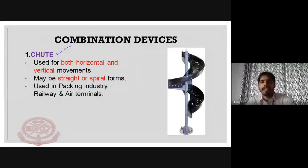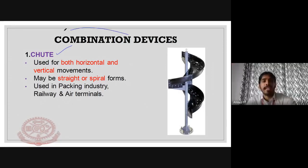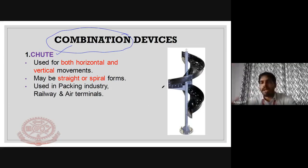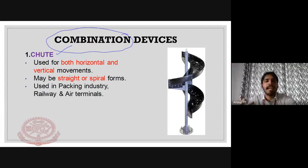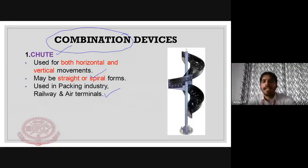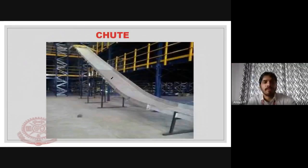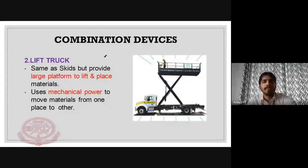Chutes are used for both horizontal and vertical movement — they are a combination device providing both horizontal and vertical movement. Chutes come in straight or spiral forms and are used in packaging industries, railway terminals, and air terminals.